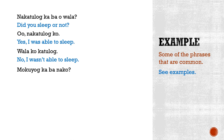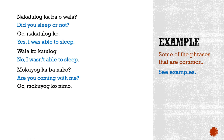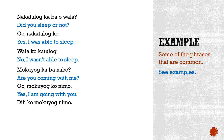Mukuyog ka ba? Kuyog is to come or to accompany. So mukuyog ka ba? translates to: Are you coming with me? Are you going with me? You answer: Oo, mukuyog kunu mo — Yes, I am going with you. Or: Yes, I am coming with you. If you say dili ko mukuyog ni mo — No, I am not coming with you. Or: No, I am not going with you.